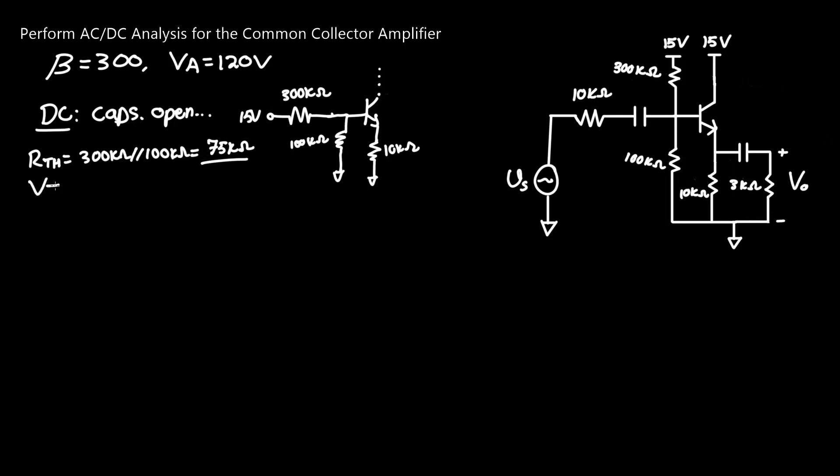For the equivalent voltage, we need to do voltage division across this 100 kilo ohm resistor, since this potential is actually what's being amplified. Voltage division: 100k over 100k plus 300k times the voltage provided, 15 volts, which gives you a new voltage of 3.75 volts.